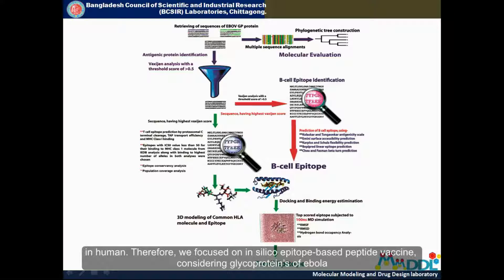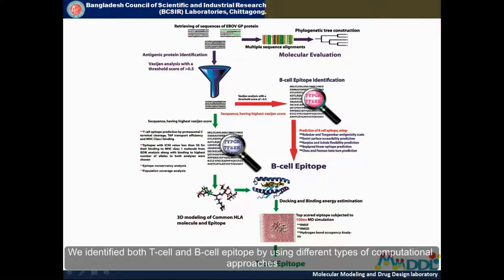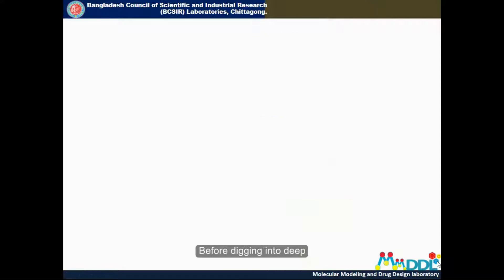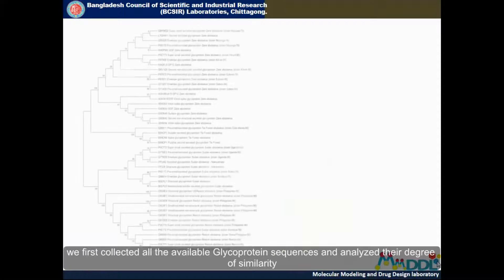Therefore, we focused on in silico epitope-based peptide vaccine considering glycoproteins of Ebola. We identified both T-cell and B-cell epitopes by using different types of computational approaches like immunoinformatics, bioinformatics, and molecular simulation studies.